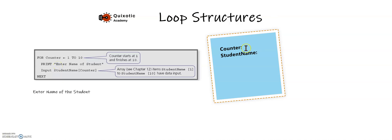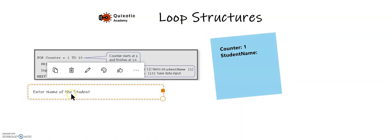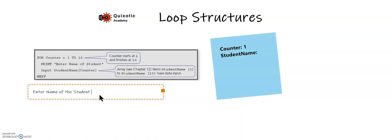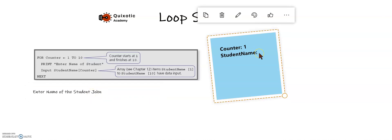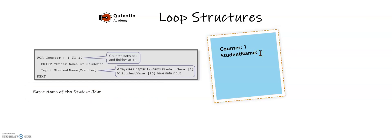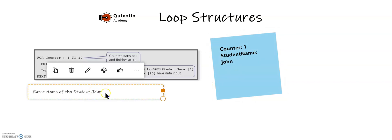When we run the program, first the counter is set to one and it outputs 'enter the name of student'. Suppose I give the name John — whenever I provide the input, it will go into a list named student name. So the list will contain John as the only name, and it will again ask me to enter a name.